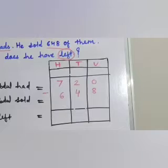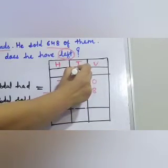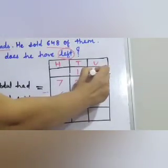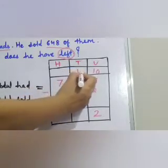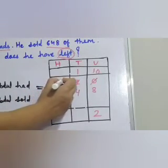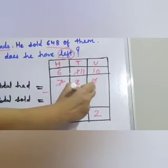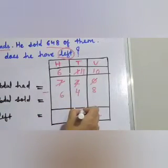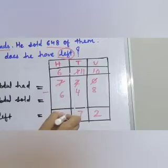Now we will start solving this sum from the units place. 0 minus 8 is not possible, so we have to borrow 1 from the tens. The tens digit will turn into 1 and this 0 will become 10. 10 minus 8 gives us 2. Now we move to the tens. We have 1 minus 4 — again, not possible. So we borrow 1 from the hundreds. This 7 will become 6 and this 1 will become 11. 11 minus 4 is 7. Now we move to the hundreds: 6 minus 6 is 0. So our answer is 72.